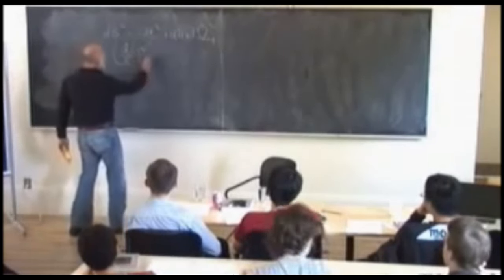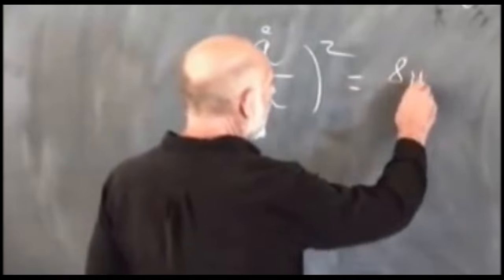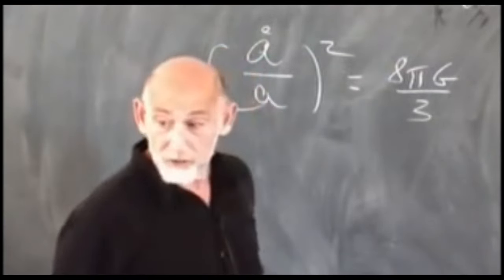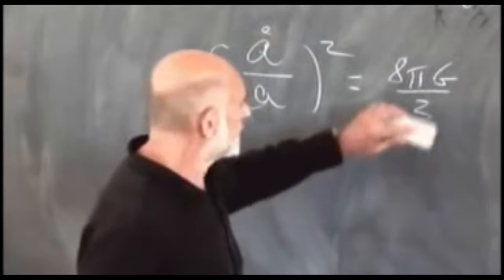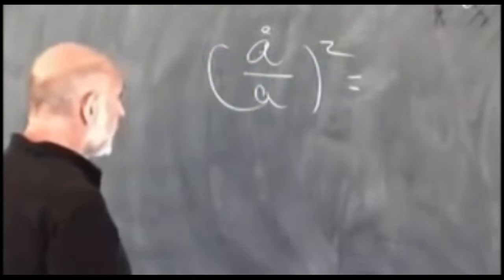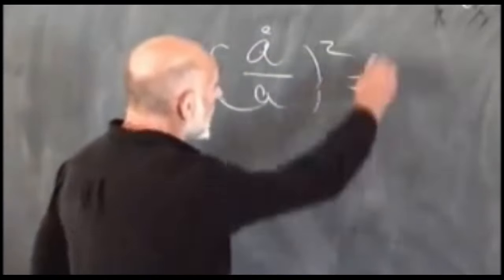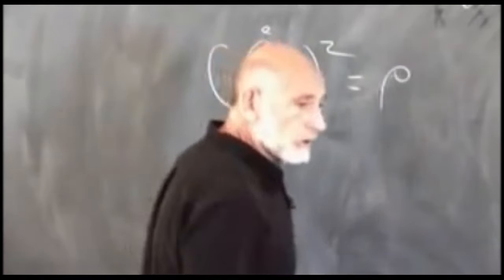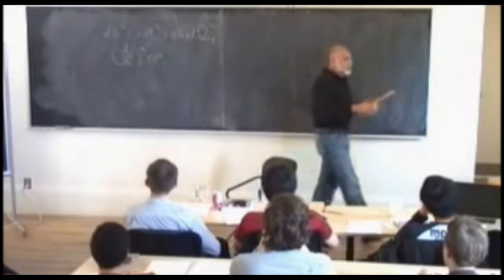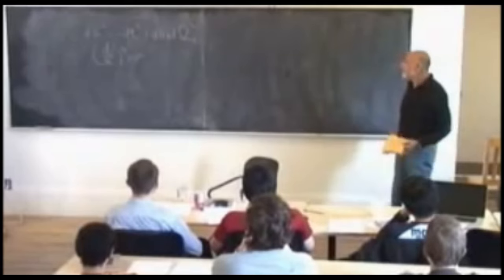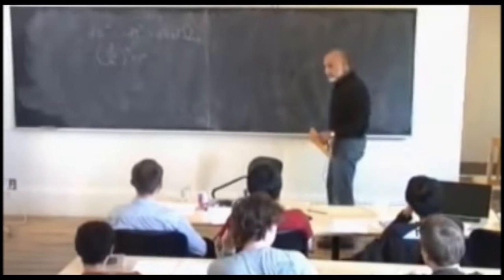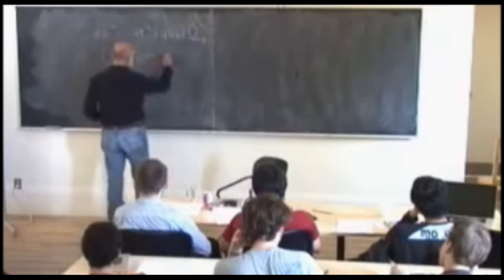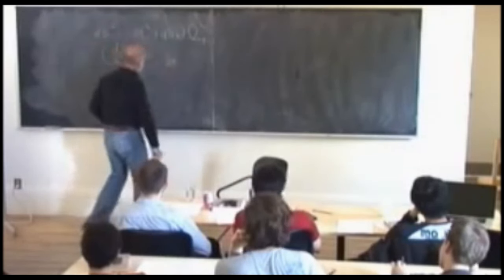The rate of expansion equals the energy density, using units where eight pi G over three equals one — Planck units. Then there's a term from the curvature of space. If space is positively curved like a three-sphere, it comes in with a minus 1 over a squared. If space is negatively curved, it comes in with a plus sign. If space itself is flat, the term isn't there.